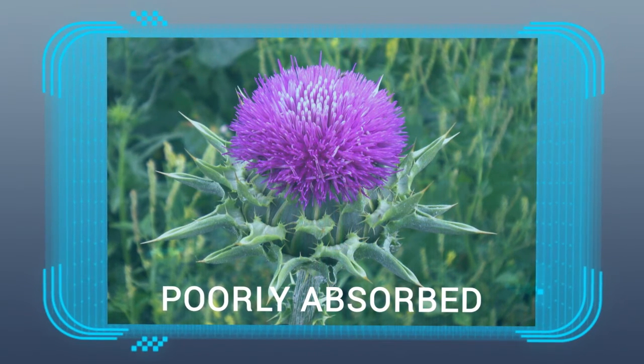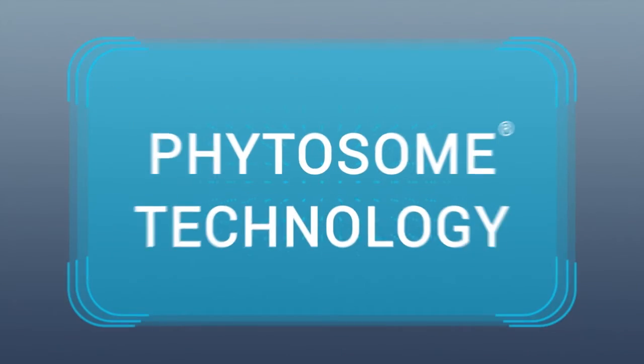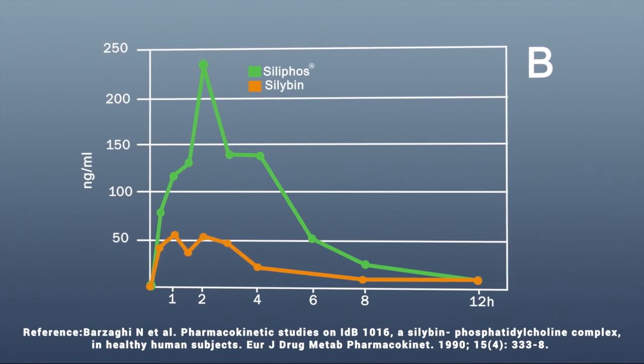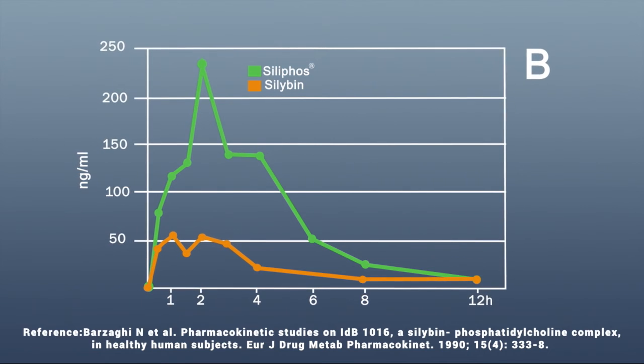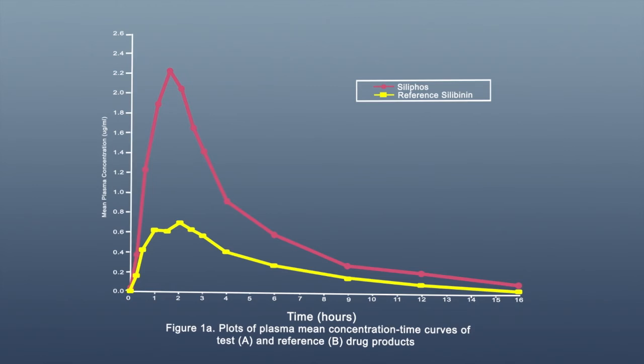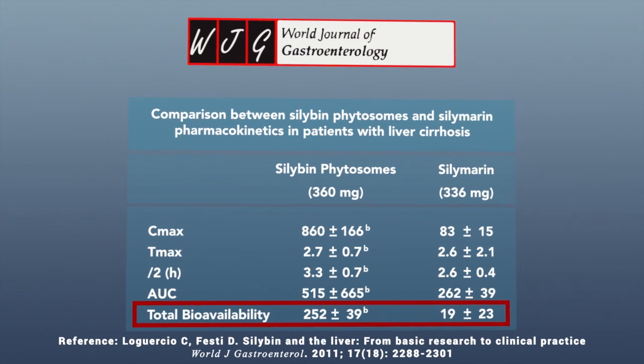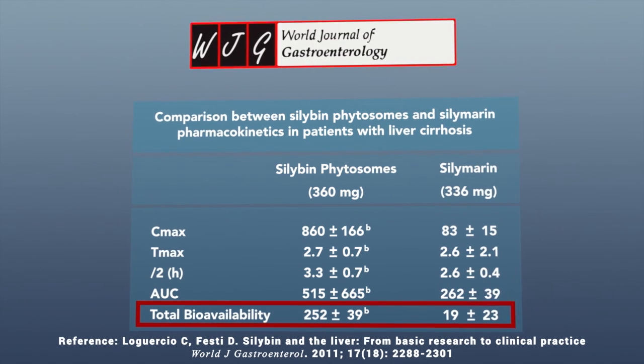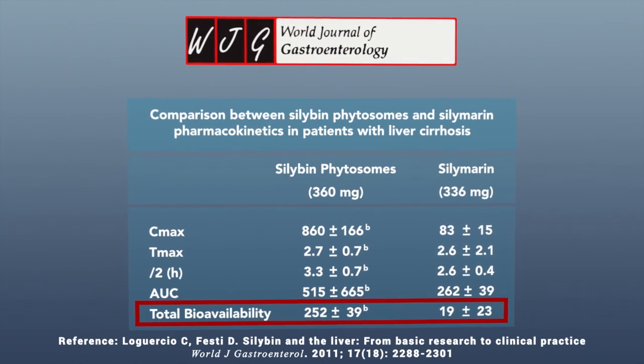But while silymarin had been found to be beneficial to liver health, it is poorly absorbed, limiting its clinical benefits. Our approach: phytosome technology. Laboratory tests and clinical studies confirm that Siliphos results in three times better absorption than silymarin alone. Our own study also shows these results. Further, in patients with cirrhosis, Siliphos is almost 10 times better absorbed than silymarin alone.